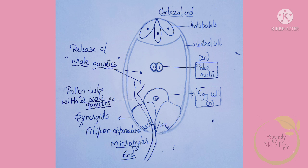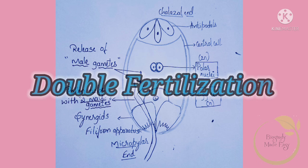The two male gametes fuse with two different cells. So there are two fertilization events. Therefore, this is called double fertilization.